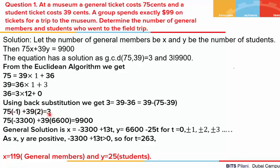Now, before we proceed, there are two ways. Either we use this equation as it is and start solving, or we can divide this whole equation by the GCD 3 and put it in a much simpler form. We will be doing that in the later examples. Here I have taken just these values as they are.